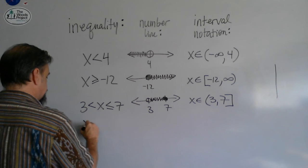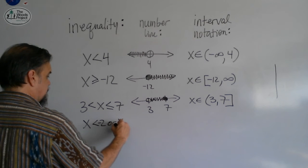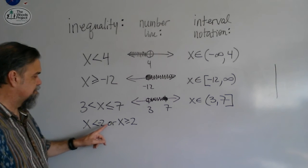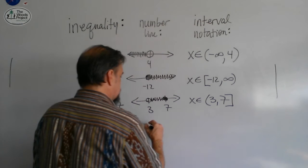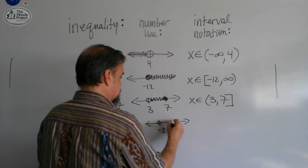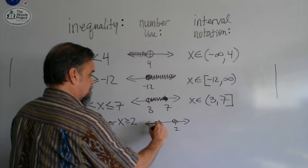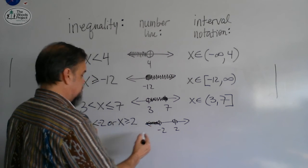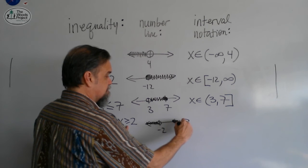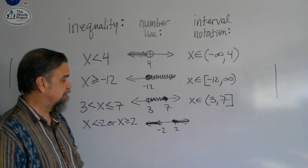This last one says x is less than negative 2, or x is greater than or equal to 2. So x is less than negative 2, or x is greater than or equal to 2. Again, let's have our number line there. I've got a negative 2 and a 2 this time. All right, well, x is less than negative 2 means we're shading it over here. These are all the numbers that are less than negative 2. Greater than or equal to 2, well, first of all, if it's equal to, I can shade that in, and greater than means over here. So we actually have two separate regions of the number line that we're shading in there.